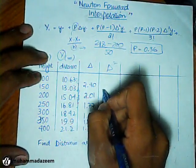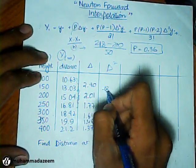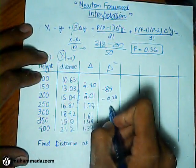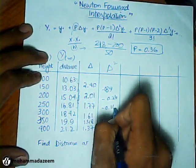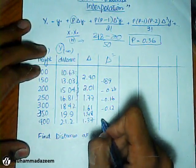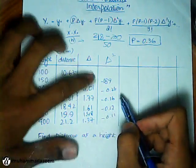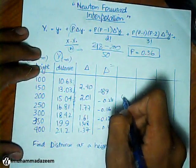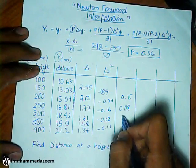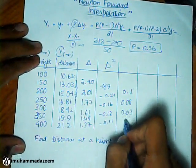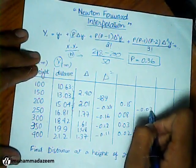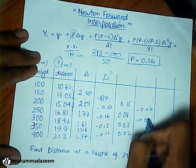Now finding delta square. Here we have minus 0.39, minus 0.24, minus 0.16, minus 0.13, minus 0.11. We have got one more less. Now we have 0.15, 0.08, 0.03, 0.02.